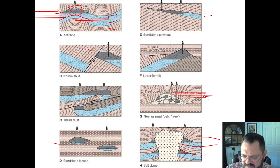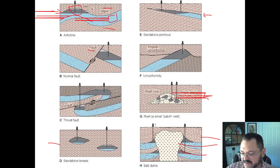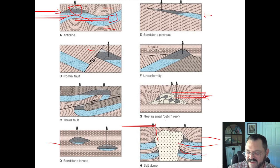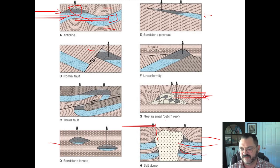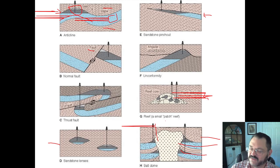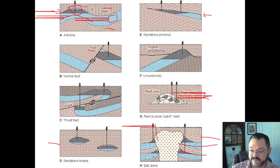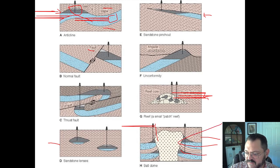There's a famous catastrophe in Louisiana where Texaco accidentally drilled into a salt dome that also had a salt mine in it. It's on the History Channel and worth looking up — nobody died, but it emptied out an entire lake which got sucked down into the salt mine.